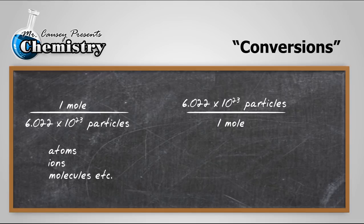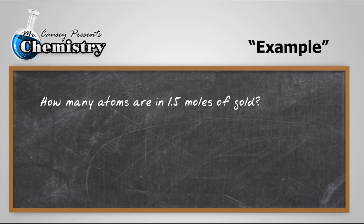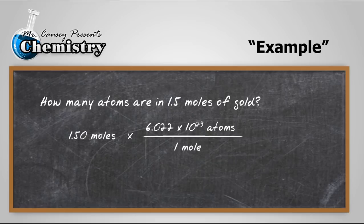Let's do an example. How many atoms are in 1.5 moles of gold? Well, I'll take 1.5 moles. Multiply it by the conversion of 6.022 times 10 to the 23 atoms per mole. I know that I've got it set up right because moles cancel out. I'm going to plug and chug into my calculator and I get 9.03 times 10 to the 23 atoms of gold in 1.50 moles.